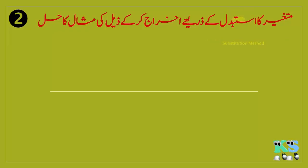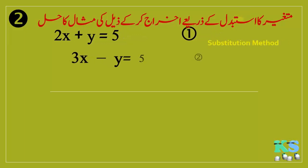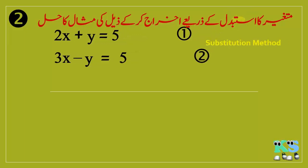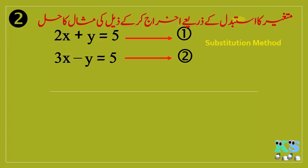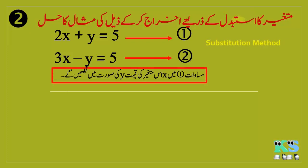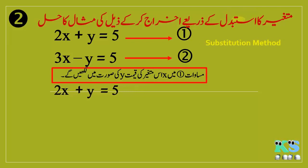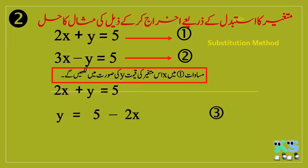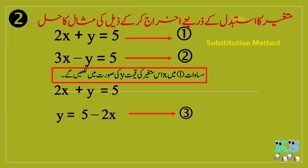Example No.2 کو اب Substitution Method کے ذریعے حل کریں گے۔ Equation No.1 یعنی 2X plus Y equal to 5 میں X کی قیمت Y کی صورت میں لکھنے پر Y equal to 5 minus 2X حاصل ہوتا ہے۔ اب ہم Y کی اس قیمت کو Equation No.2 میں رکھیں گے۔